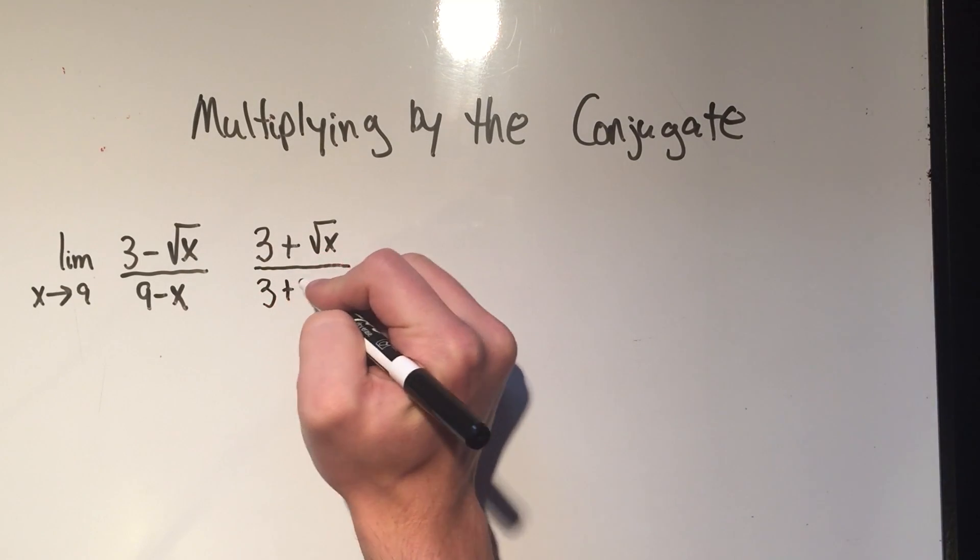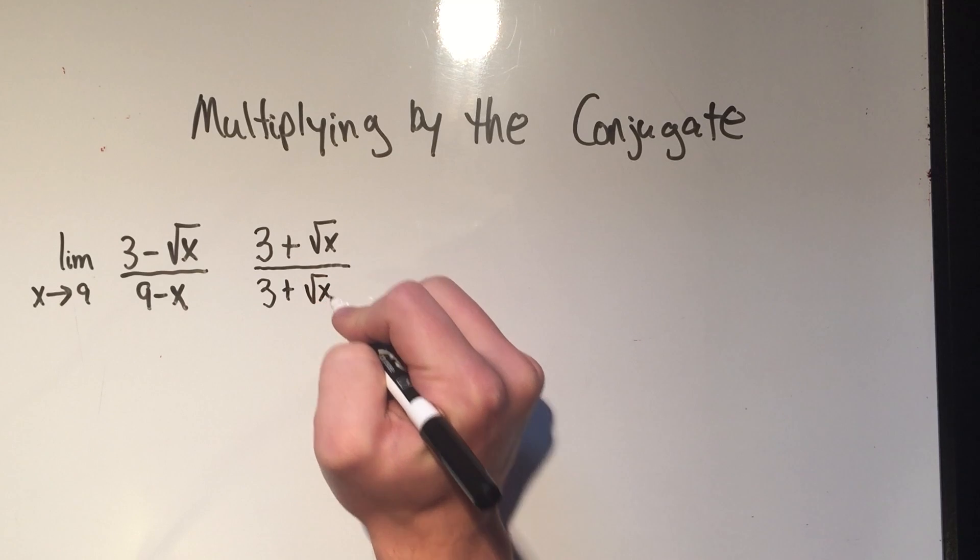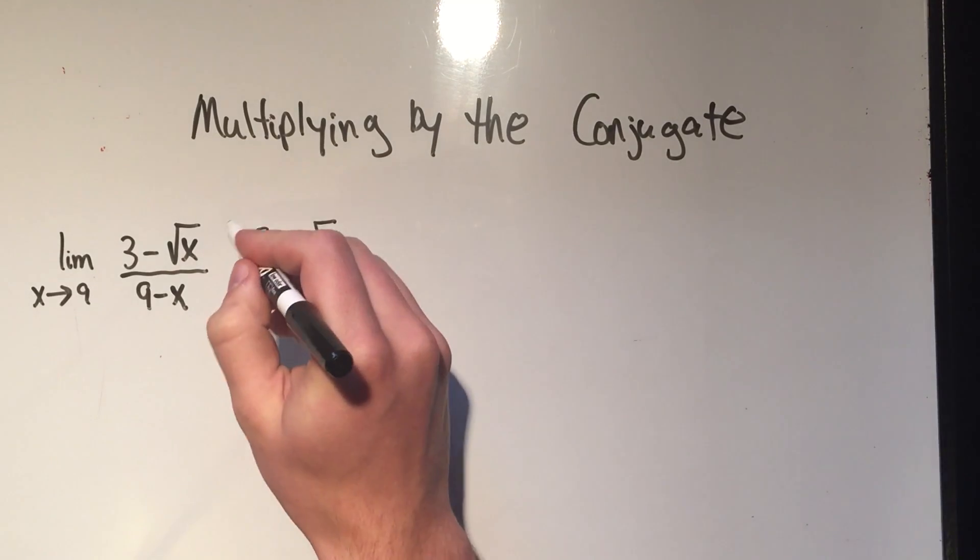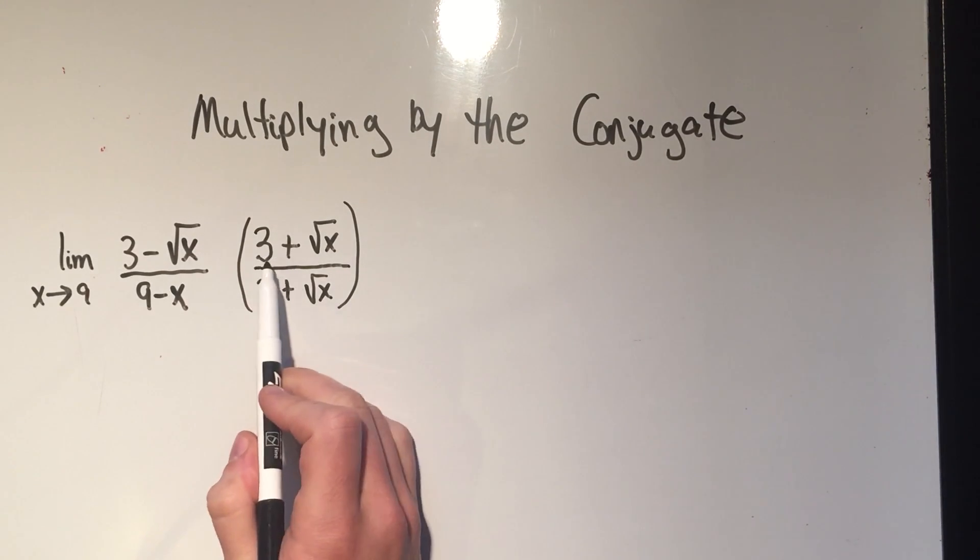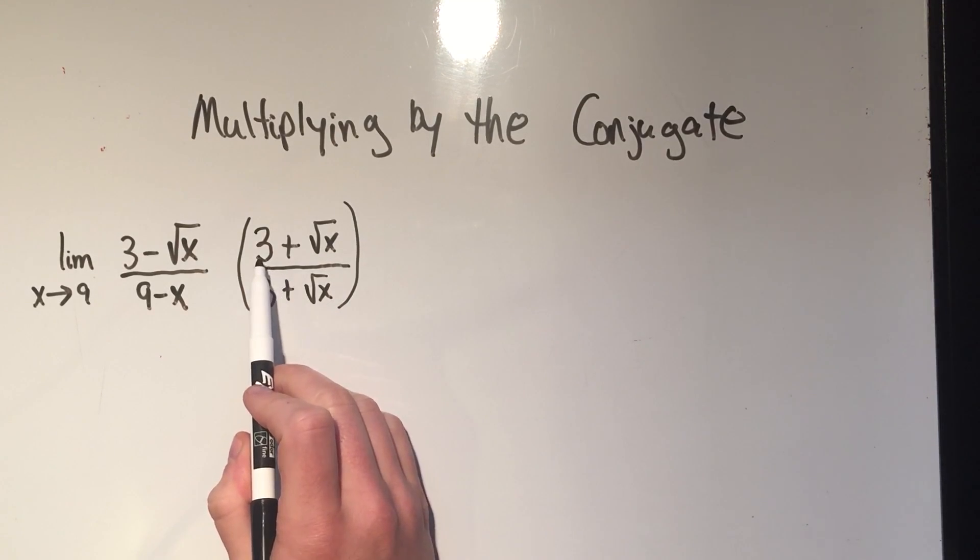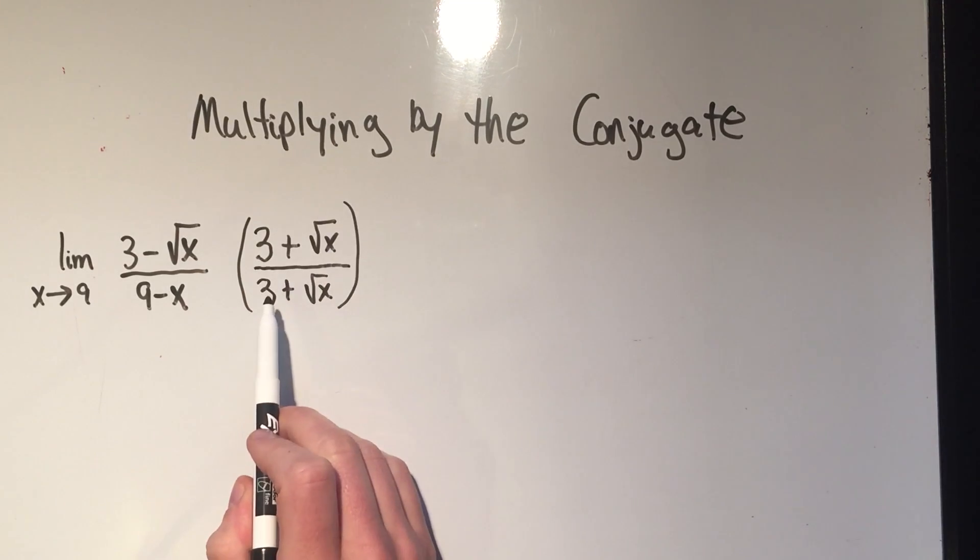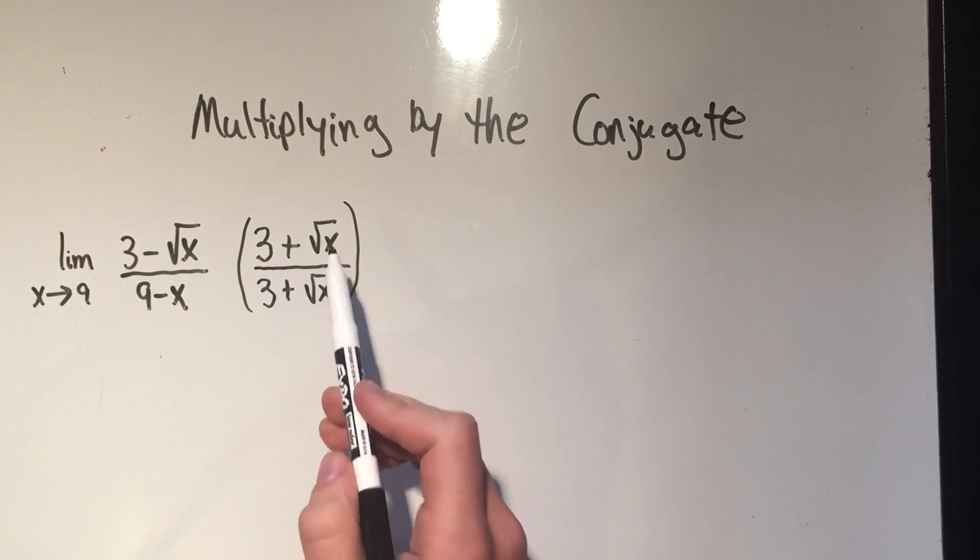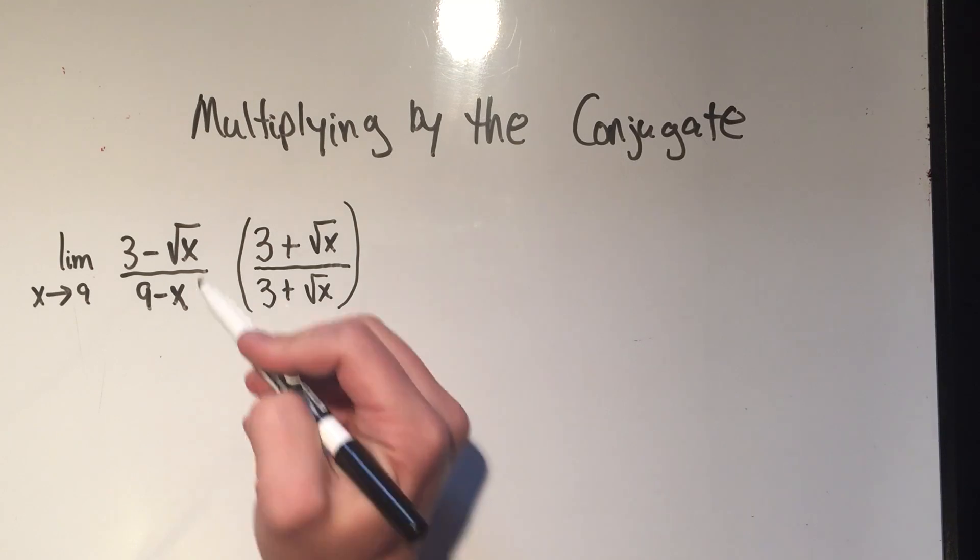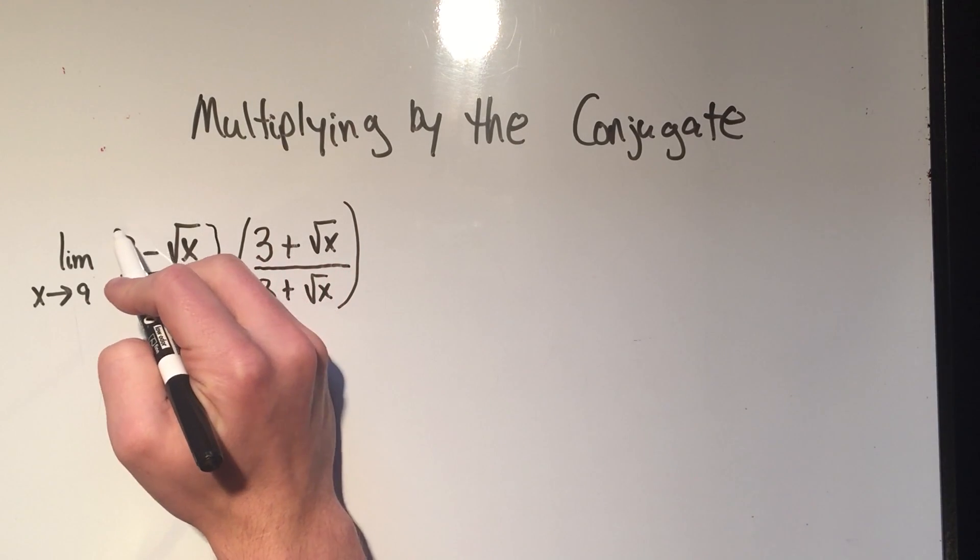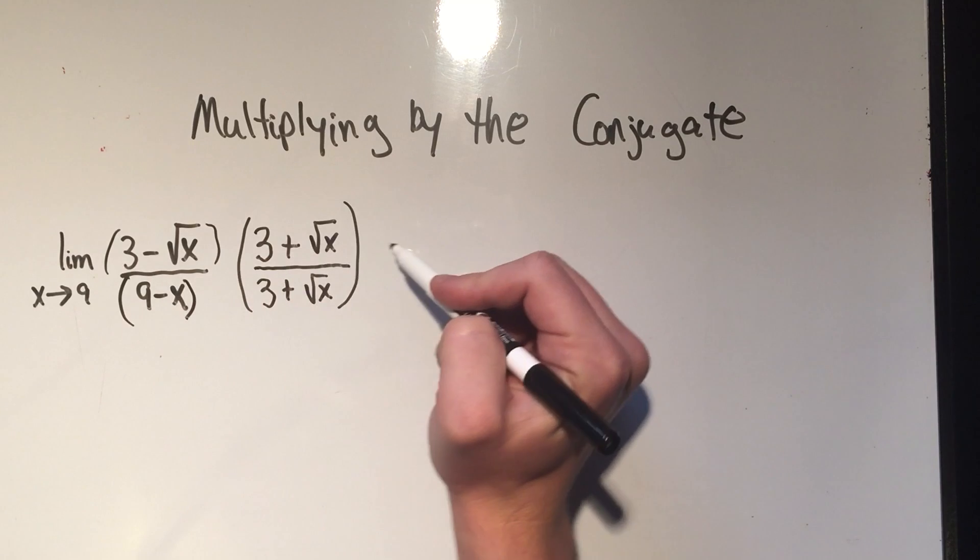But I'm not allowed to just multiply by that thing out of thin air. The only thing I'm allowed to do algebraically is multiply by 1. I'm allowed to multiply things by 1 because they give me the same value. So I need to multiply by 3 plus square root of x over 3 plus square root of x, because this whole term is 1.